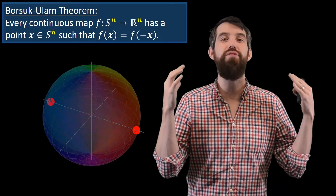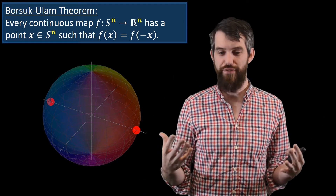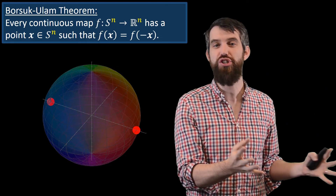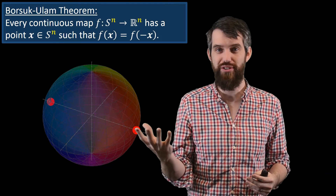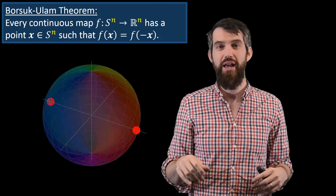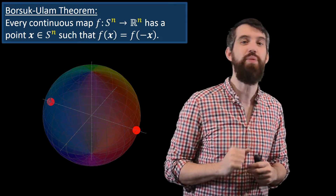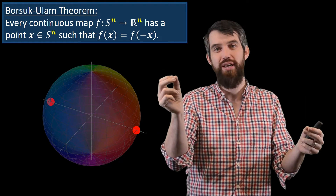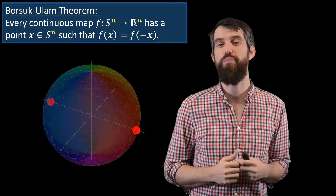The answer to all of this is the Borsuk-Ulam theorem, and it says that if you have a continuous function from the n-dimensional sphere to n-dimensional real space — for example, the two-dimensional sphere to the two-dimensional plane — so Sn to Rn, then there must be one pair of antipodal points where f(x) is equal to f(−x). That's the Borsuk-Ulam theorem.